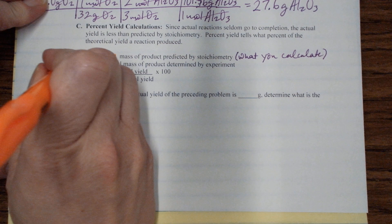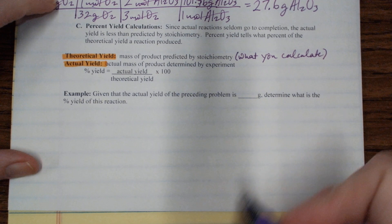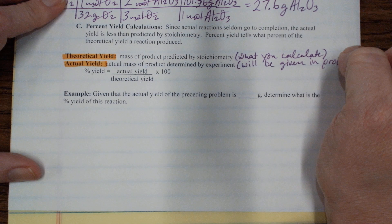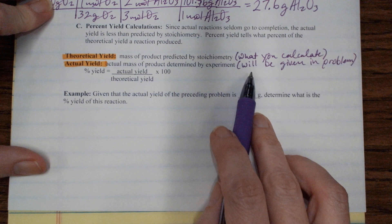And then the actual yield, this is the actual mass of product determined by experiment. So for your test and quiz and homework, this will be given in the problem. So if we were in the lab, this would be what you actually found in your experiment.